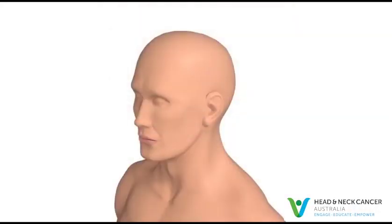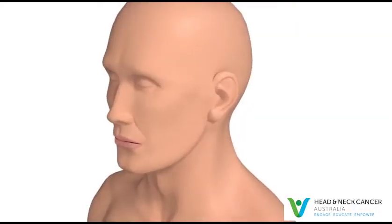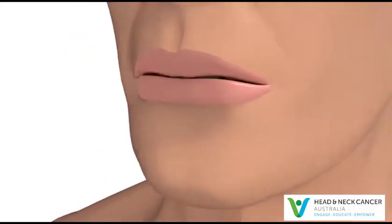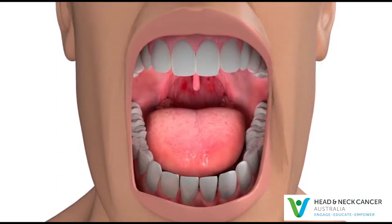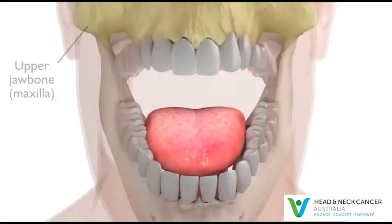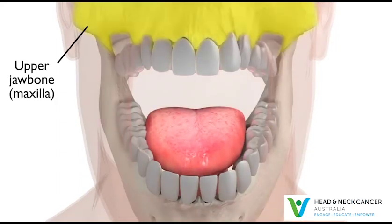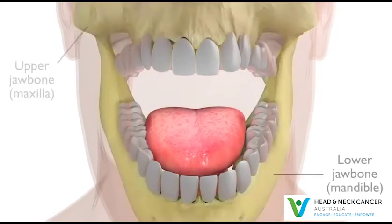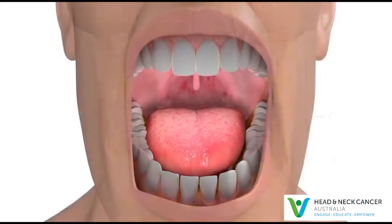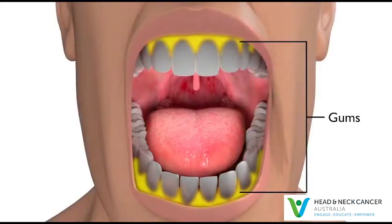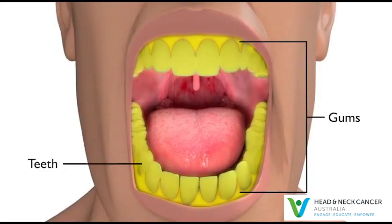The oral cavity or mouth contains many different structures. These include the upper jawbone, also known as the maxilla, the lower jawbone, also known as the mandible, and the gums and teeth.